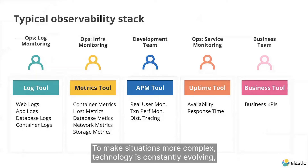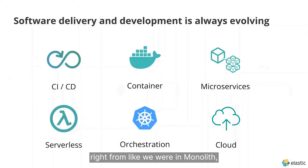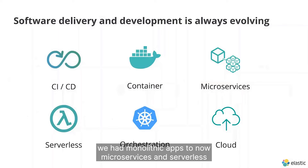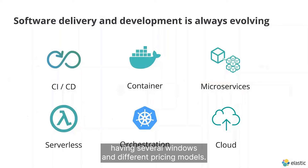To make situations more complex, technology is constantly evolving — from monolith apps to now microservices, serverless environments, cloud, containerized setups, and so on. Often companies have a very hybrid setup that leads to organizations having several vendors and different pricing models.